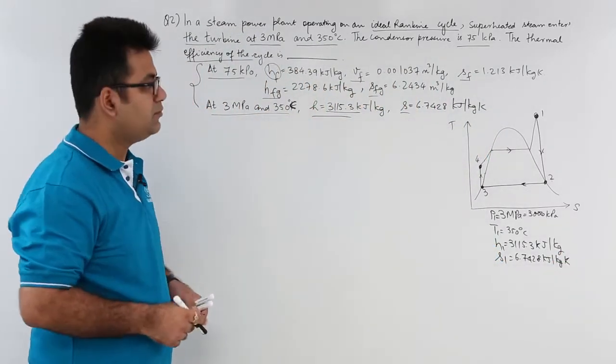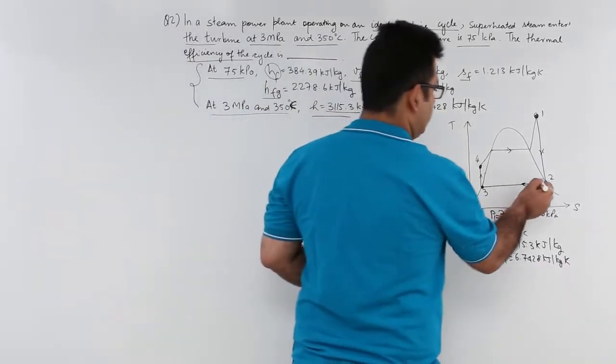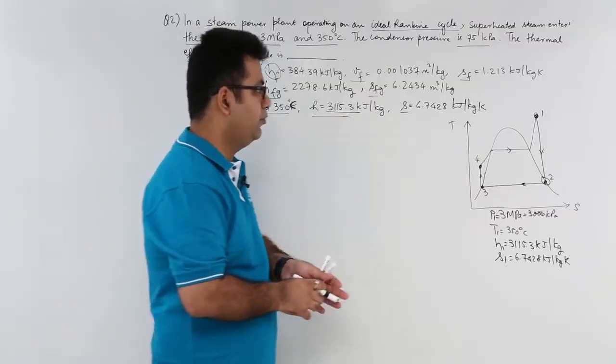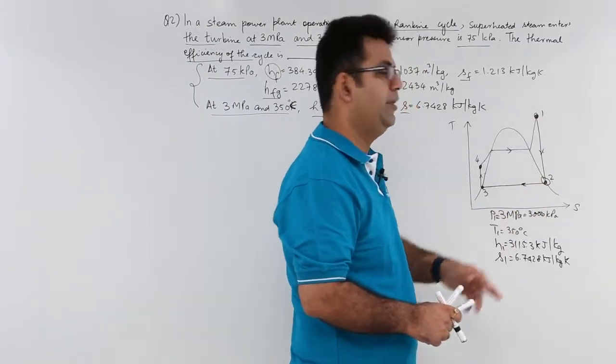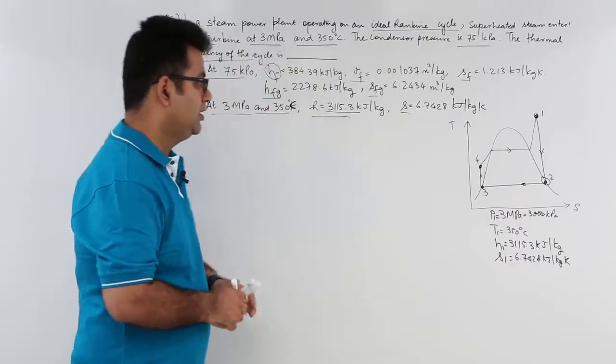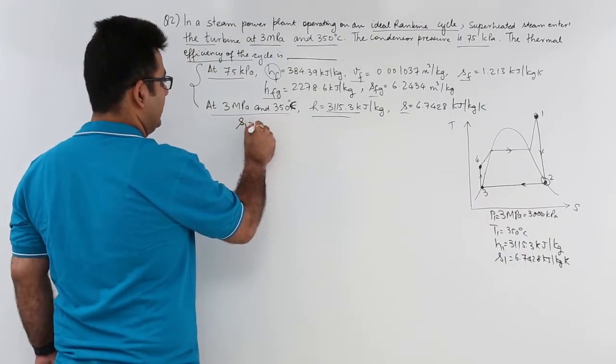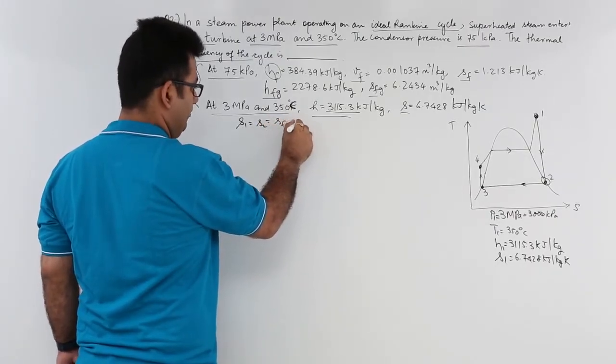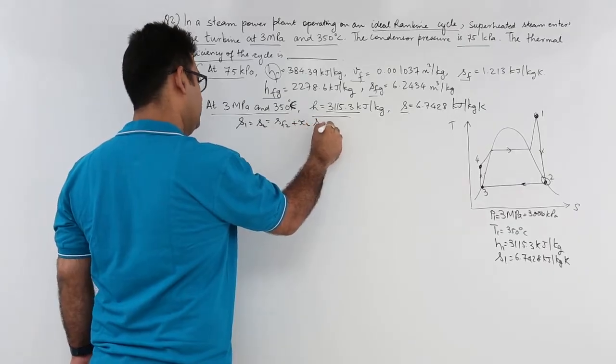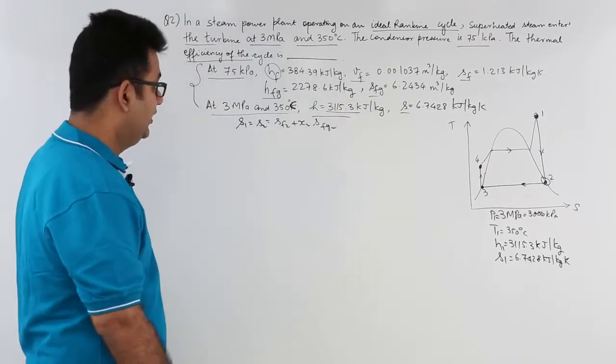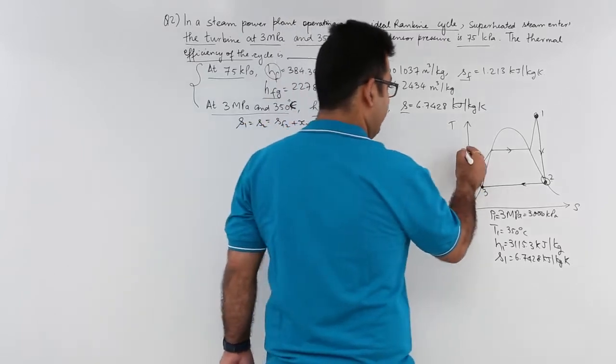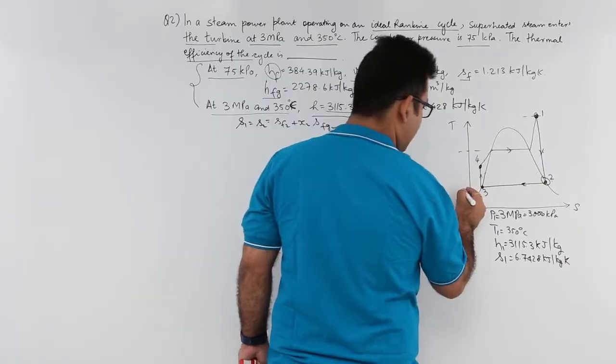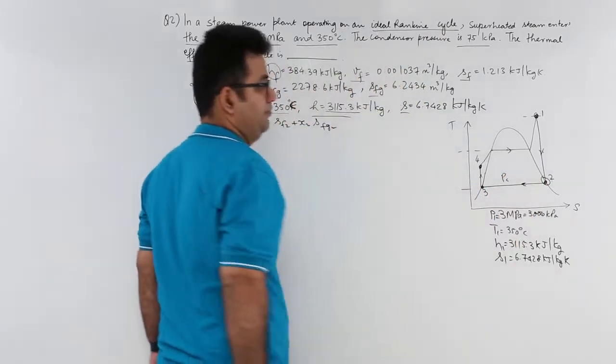Now, let's try and get the condition at state 2. We know that the entropy would be same. Whatever you have at 1, the same would be at 2. So, I can say that S1 is equal to S2 and this is equal to SF2 plus X2 into SFG2. This is the boiler pressure, this is the turbine pressure and this is the condenser pressure.